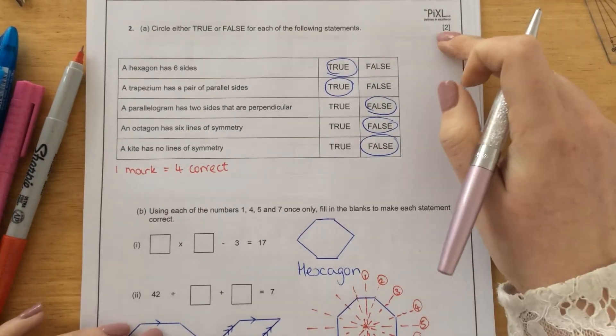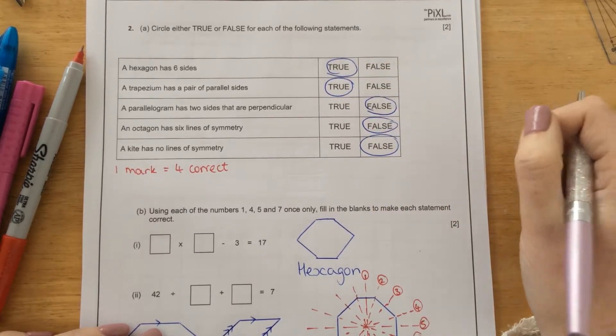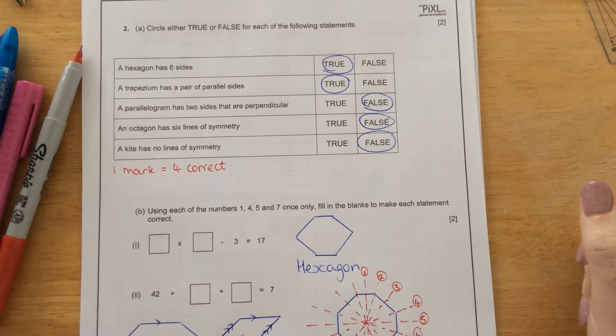So the examiner will give you two marks if you have all five of these correct and one mark if you have four correct. Anything less than that will be zero marks.